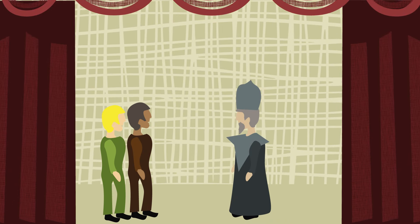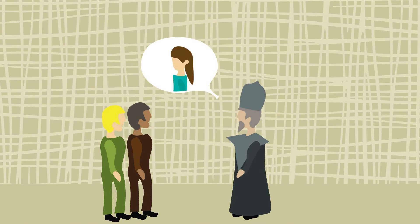In Act 2, with the series of tests about to begin, Zarastro explains that he kidnapped Pamina from her evil mother, the Queen of the Night, because Tamino and Pamina are meant to be together.